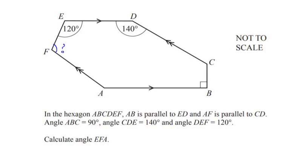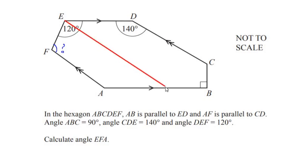Let us start with a small construction where we are going to draw a line parallel to the sides AF and CD. Let us draw it here and let it touch the line AB, and we are going to give the point the name G.